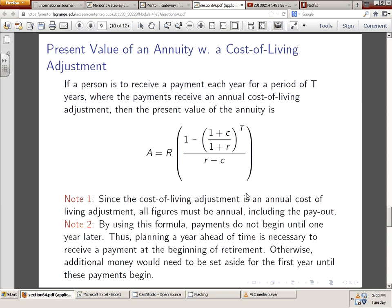Now, we do this with a simple change to our payment present value formula. And if you look, really, we've got this relationship which says A equals R times, in numerator, 1 minus the ratio of 1 plus c to 1 plus r, raised to the exponent of time. So t is in t years, divided by r minus c, which should always be positive, hopefully. Now, the note with this is that all figures must be annual. Compound frequency, payment, contributions. And by using this formula, payments don't begin until one year later. So what that means is the average individual needs to plan one year ahead at the beginning of retirement. They need to have money on hand.